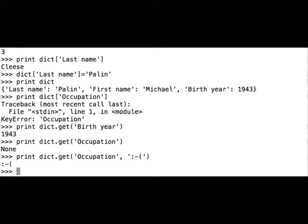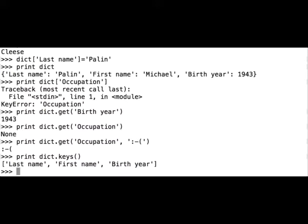Now we can look at the other three methods: keys, values, and items. First we will look at the keys in our dictionary. Print, dict, keys, open and close brackets. And we can see that the program returned a list of all the keys found in our dictionary.